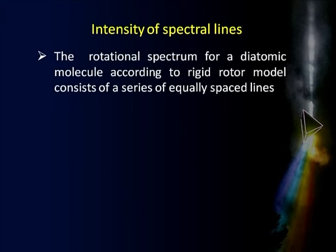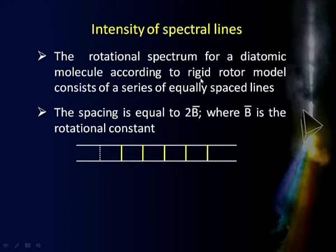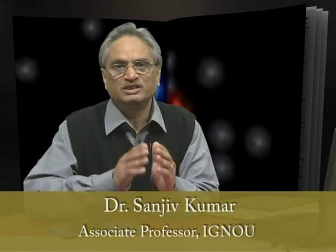Let us talk about the intensity of spectral lines. When we talked about the rotation spectrum of a diatomic molecule as a rigid rotor, we found a series of equally spaced lines with spacing equal to 2B̄, where B̄ is the rotational constant. The question now arises: what about the intensity of these spectral lines? Recall from our earlier introduction to spectroscopy that any spectrum has three characteristics — position of the line, intensity, and width. In the previous session we discussed position; now let us address intensity.